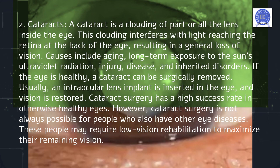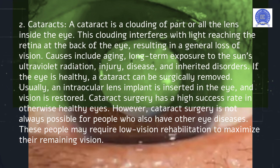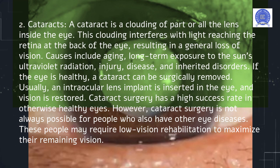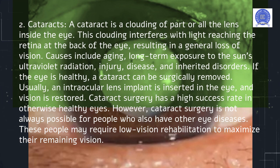A cataract is a clouding of part or all of the lens inside the eye. This clouding interferes with light reaching the retina at the back of the eye, resulting in a general loss of vision. Causes include aging, long-term exposure to the sun's ultraviolet radiation, injury, disease, and inherited disorders.